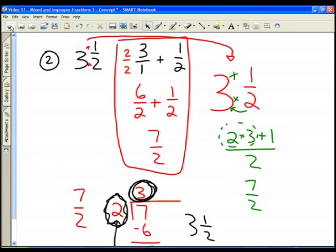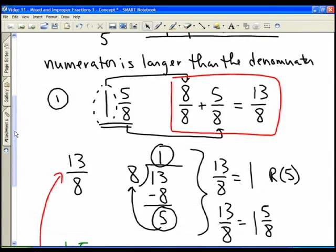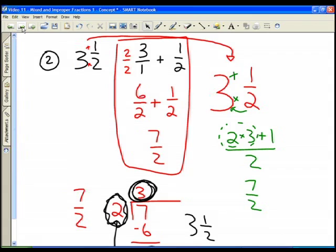So that should give you a pretty good idea of converting mixed to improper. Again, you can choose whichever method you like. But I really think that the method here of making sure that you know that there's a multiplication sign here and an addition sign there and that it all goes over the original denominator when you're moving from mixed to improper.